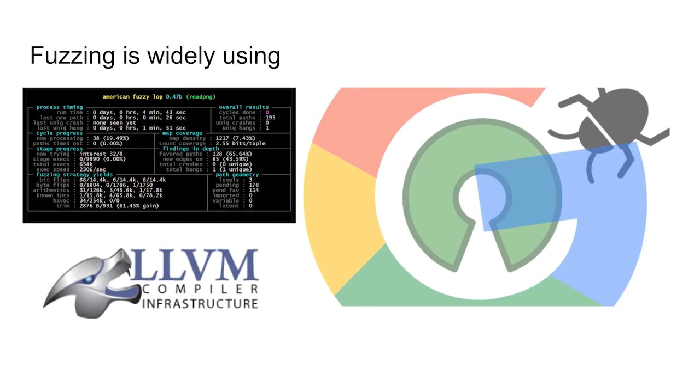In recent years fuzzing has become really popular. It is considered one of the most effective ways of finding security bugs in software. For example, AFL fuzzing has already found thousands of bugs in open source projects and because of such successful attempts, many big firms invest a lot of computing resources in large scale parallel fuzzing.